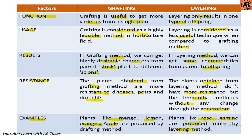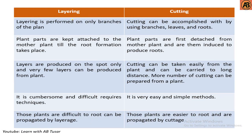Here you can see the difference between layering and cutting. Layering is performed on branches of the plant only, while cutting can be accomplished using branches, leaves, and roots. In layering, plant parts are kept attached to the mother plant until root formation takes place; in cutting, parts are first detached from the mother plant and then induced to produce roots. Layers are produced on the spot, and very few can be produced per plant. Cuttings can be taken easily and carried long distances, and more cuttings can be prepared from a plant.